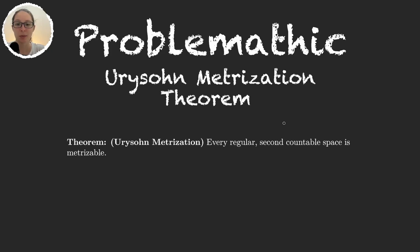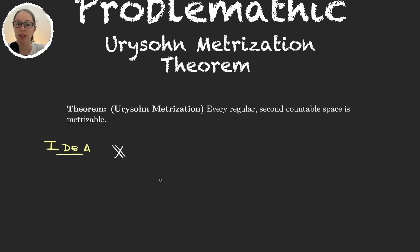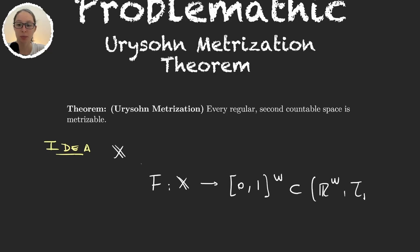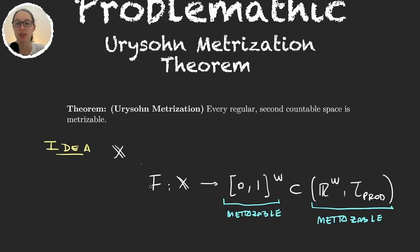Let's start with the theorem. Every regular and second countable space is metrizable. If you don't remember what these mean, check out the videos on those topics. The proof idea is: we work with a space X that's regular and second countable, and we create a function f from X to [0,1]^ω, where [0,1]^ω has the subspace topology from ℝ^ω with the product topology. We know this space is metrizable, so if we build f as an embedding (homeomorphism onto its image), then X will also be metrizable.